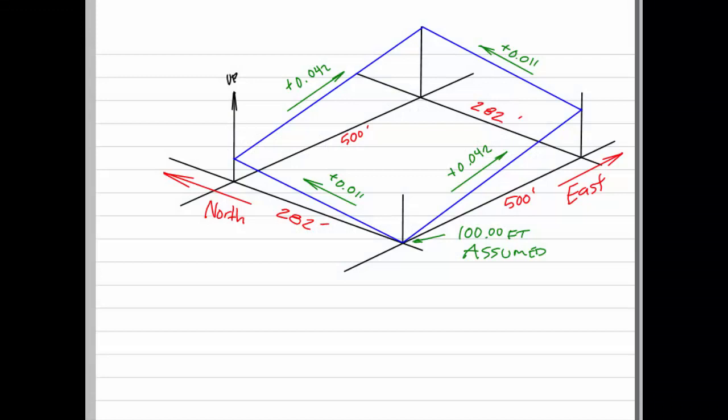In this scenario we have a 500 foot by 282 foot concrete slab to be built. It needs to have a slope in the east-west direction and another separate slope in the north-south direction in order to fit the site.